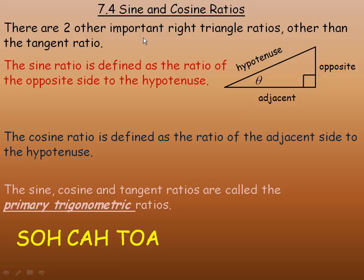There are two other important right angle triangle ratios other than the tangent ratio that we looked at in the previous lesson. In a right triangle, in the tangent lesson, we defined what the opposite side is and the adjacent side. Remember, this is the angle theta we're referring to.